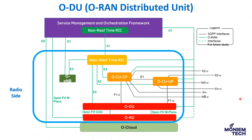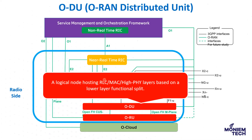The ODU — O-RAN Distributed Unit — is a logical node. Based on functional split 7.2, it hosts the RLC, MAC, and the high physical layer, based on the lower-layer functionality split — as already explained in previous episodes.